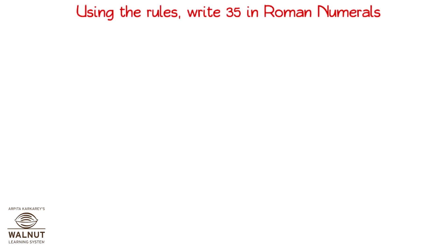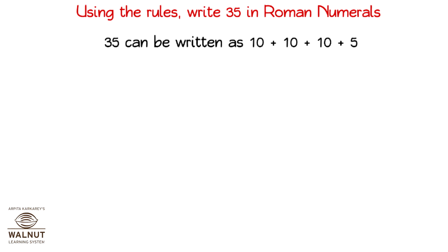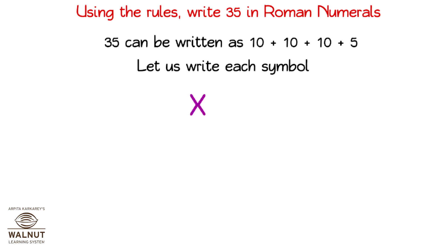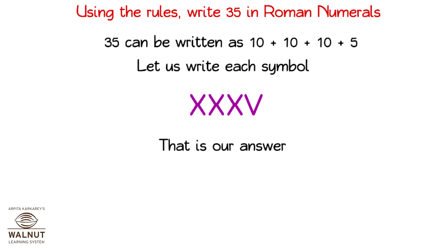Using the rules, write 35 in Roman numerals. 35 can be written as 10 plus 10 plus 10 plus 5. Let us write each symbol: X, X, X and V. That is our answer.